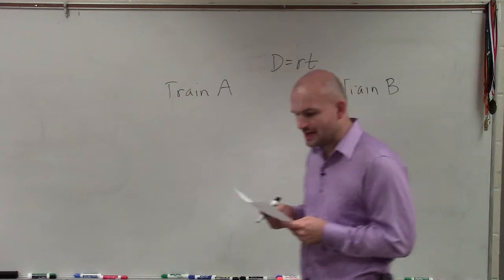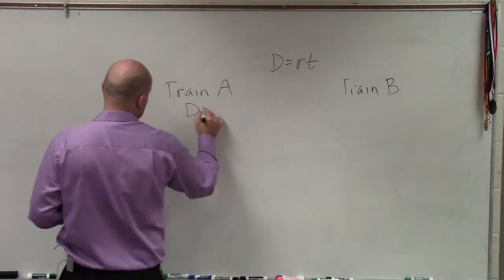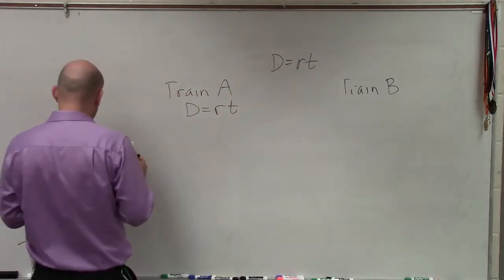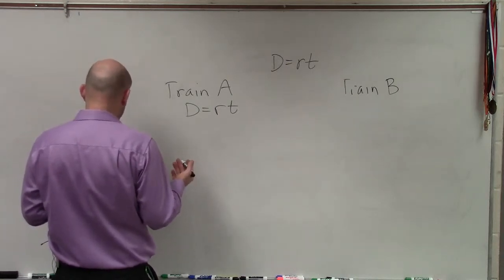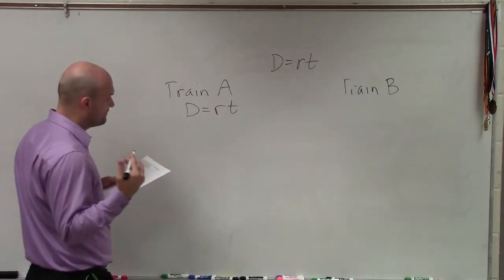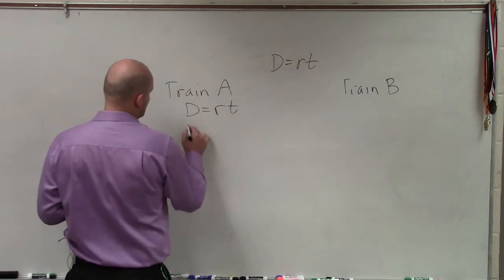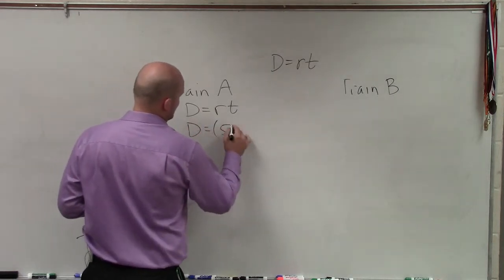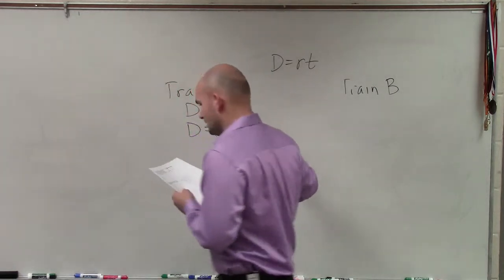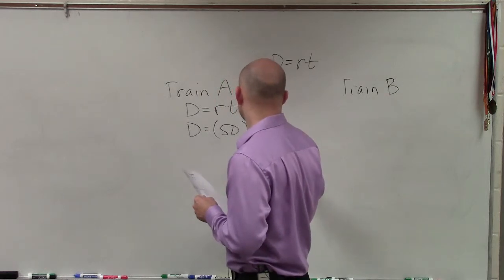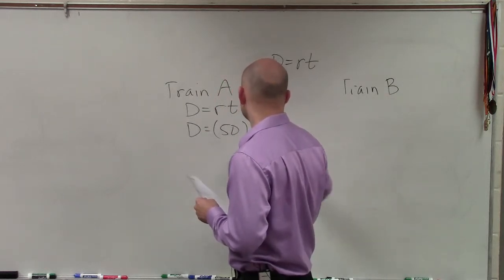And it says train A travels, so I'd write distance equals rate times time. So train A, we do not know the distance. We're seeking how far the distance is. But we know it traveled 50 miles per hour for three hours. So distance equals 50 miles per hour times three hours.